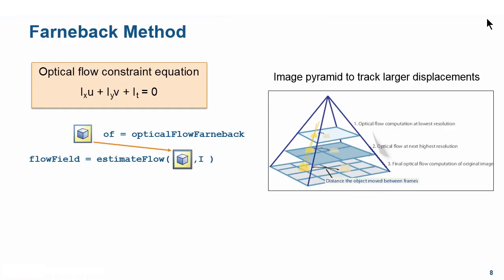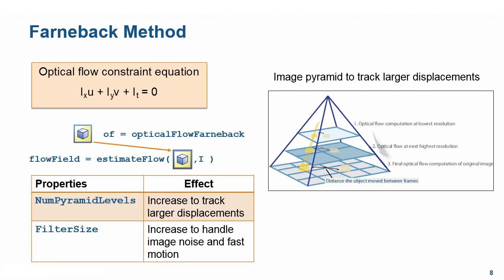Let's go back to the presentation. The Farneback algorithm uses pyramid levels to track larger displacements, controlled using the numPyramidLevels property. Note also that the algorithm has a filter size property that can be increased to make the algorithm more robust to noise. Please refer to the documentation link in the resources section to get a full list of parameters. Recall that Farneback is also a dense flow algorithm, meaning it processes the entire image, leading to accurate fields but higher computation time.